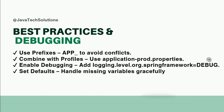For best practices: use a prefix to avoid conflicts, and combine with profiles such as `application-prod`, `application-dev`, `application-uat`, or `application-stress`. For debugging, set the logging level for `org.springframework` to debug. You can also gracefully handle missing variables. Real-world use cases include AWS, GCP, Azure deployments, microservices in Kubernetes or Docker, and CI/CD pipelines where configs change dynamically.